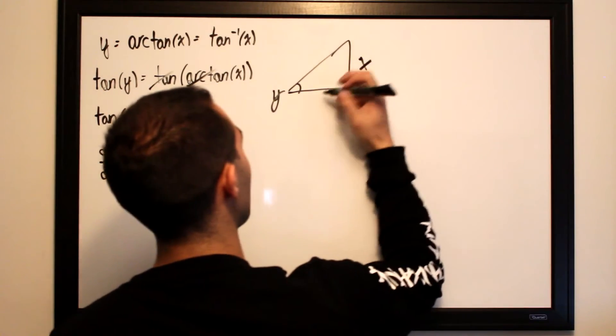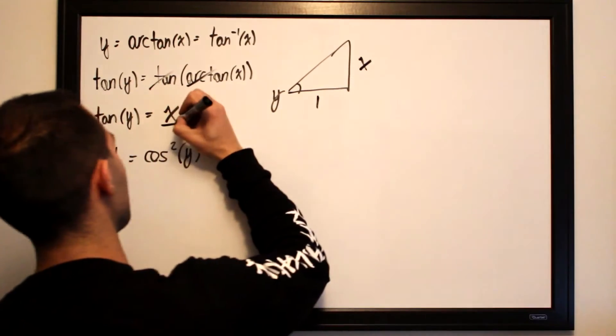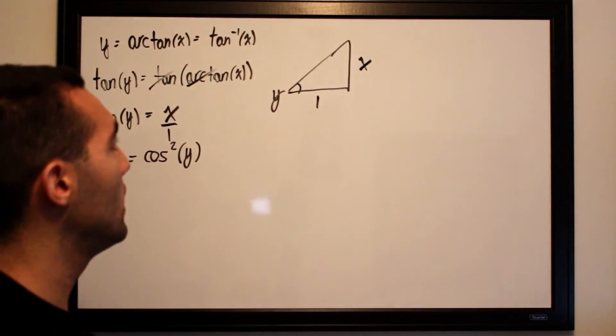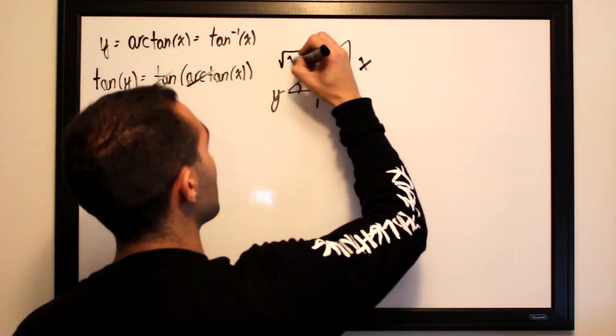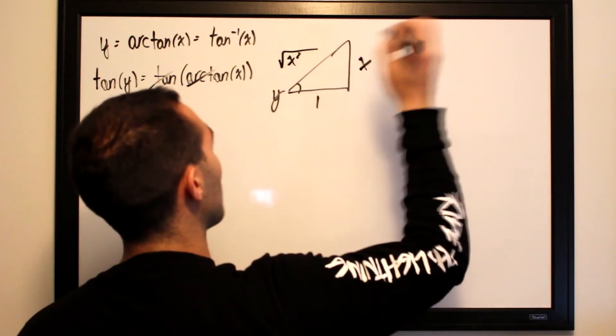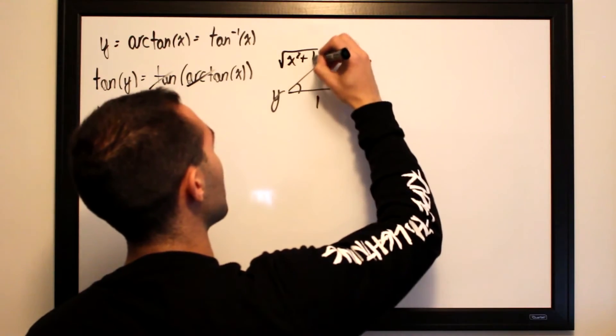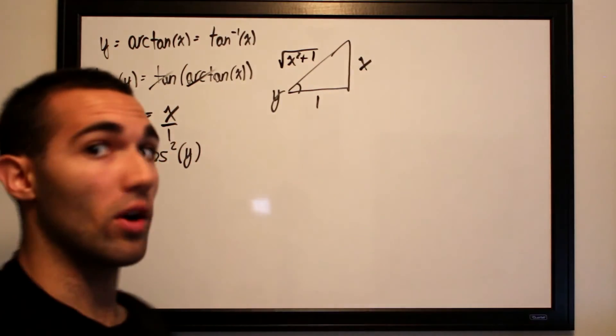So we have x over here and 1 over here, because this can be viewed as x over 1. So the hypotenuse will simply be the square root of the sum of their squares, which is the square root of x squared plus 1.